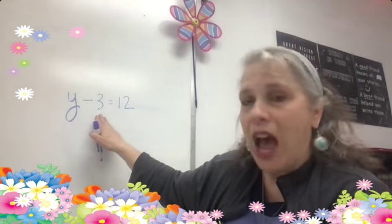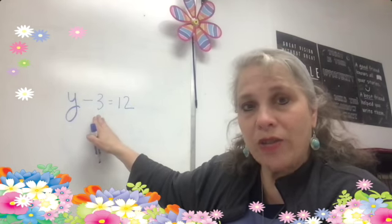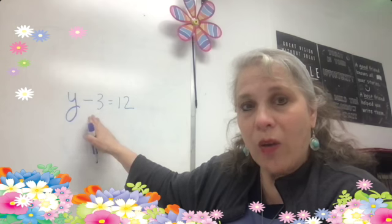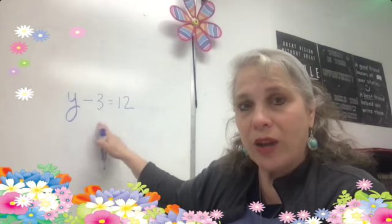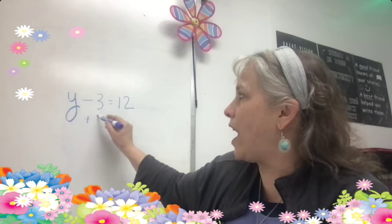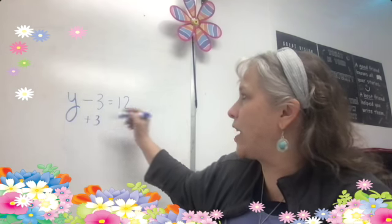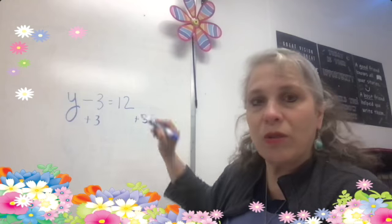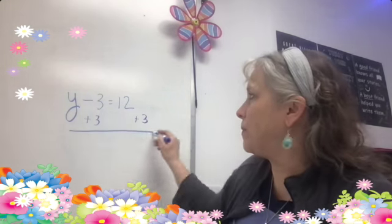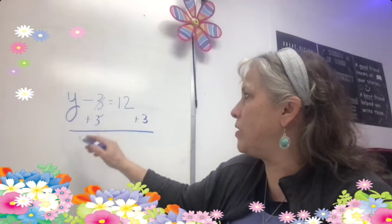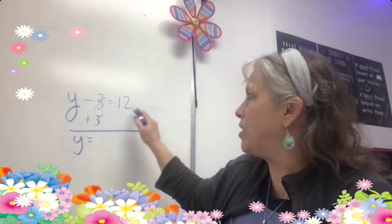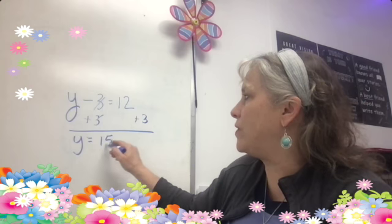What we are going to do is we are going to add or subtract, multiply or divide — whatever we need to — to get that y alone. We want y equals something. So, in this case, if I add 3 to this, I get 0. Just remember to do the same thing to both sides. So, this cancels to 0. y is alone. 12 plus 3 is 15.